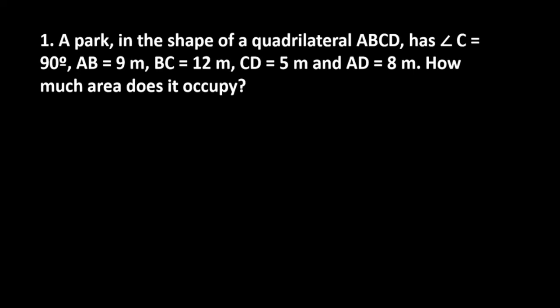Hello everyone, let's start with exercise 12.2. This is Heron's formula. The first question says a park in the shape of quadrilateral ABCD has angle C as 90 degrees. AB is 9 meters, BC is 12 meters, CD is 5 meters, and AD is 8 meters.